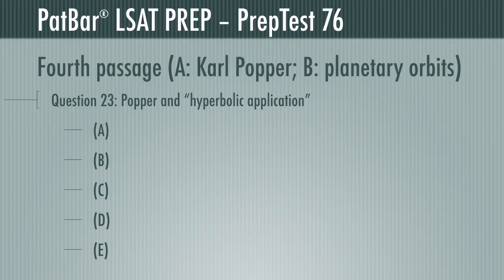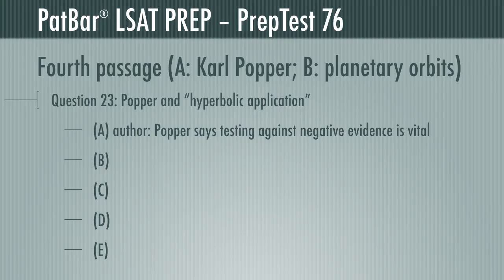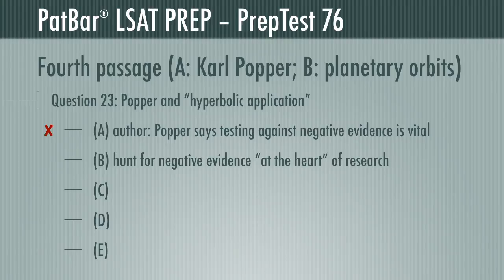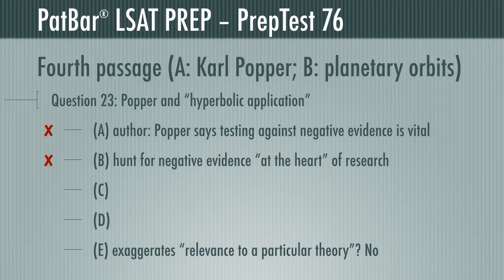Question 23 points you to where the author of Passage A writes that Popper gives the logical asymmetry a hyperbolic application, and asks what the author is suggesting. Let's eliminate A immediately — the author believes Popper would find a theory scientific only if it can be tested by evidence that might disprove it, so 'does not apply' does not apply. The author cannot suggest that Popper underestimates the logical asymmetry, since the passage states Popper finds the search for negative evidence to be at the heart of scientific research — the opposite of an underestimation.